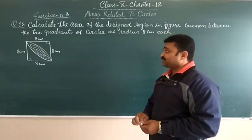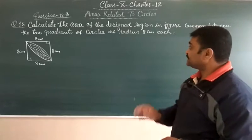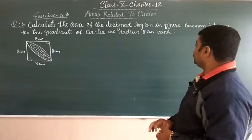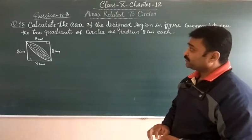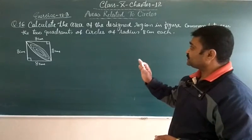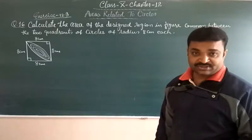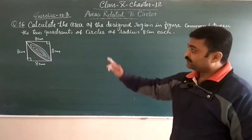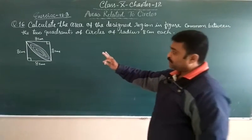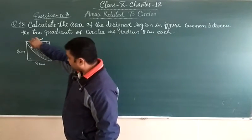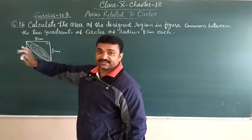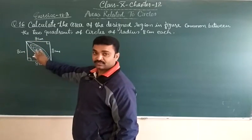In this question we have to calculate the area of the designed region in figure common between the two quadrants of circles of radius 8 cm each. We have given this figure. We have to find the area of this common design.